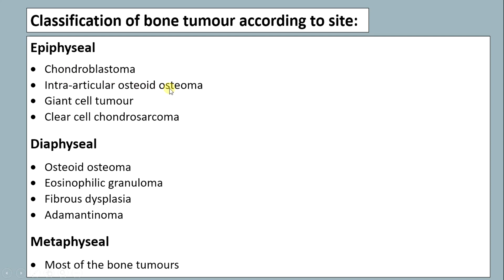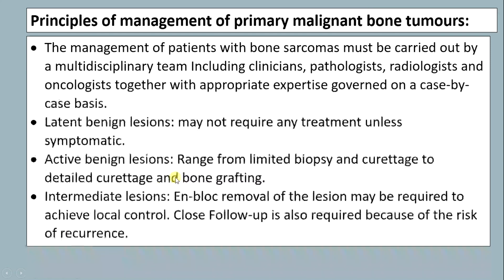Epiphyseal tumors include chondroblastoma, intraarticular osteoid osteoma, giant cell tumor, and clear cell chondrosarcoma. Diaphyseal tumors include osteoid osteoma, eosinophilic granuloma, fibrous dysplasia, and adamantinoma. Metaphyseal includes most bone tumors.